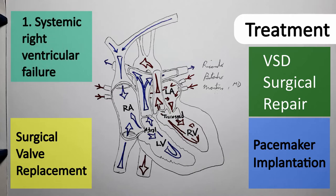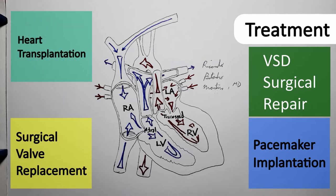Systemic right ventricular failure refers to failure of the right ventricle that is on the left side, pumping against the systemic circulation — which is what we have in LTGA. While the standard drugs may provide symptomatic relief, unfortunately heart transplantation is the only unequivocal treatment for heart failure in levo TGA.